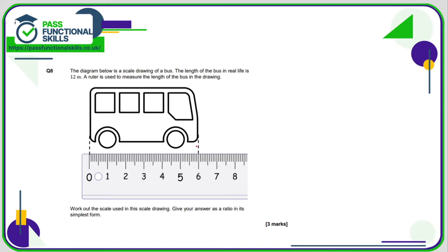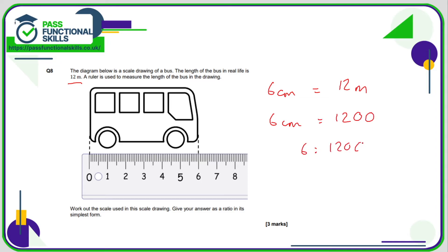Question eight: the drawing of the bus is 6 centimeters and represents 12 meters in real life. Converting 12 meters to centimeters gives 1200 centimeters, so the scale is 6 to 1200. Simplifying by dividing both by 6: 6 ÷ 6 = 1 and 1200 ÷ 6 = 200, so the scale is 1 to 200.